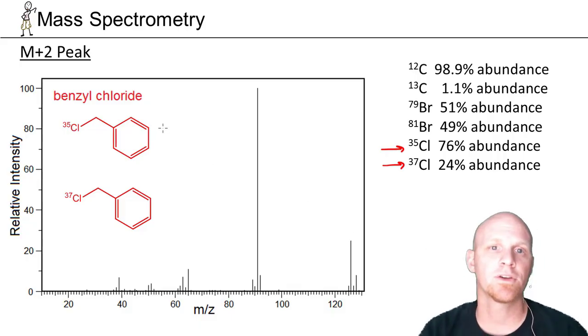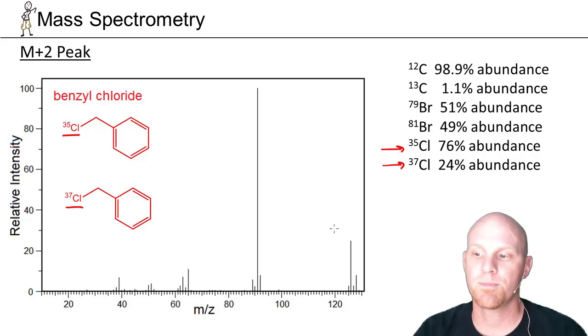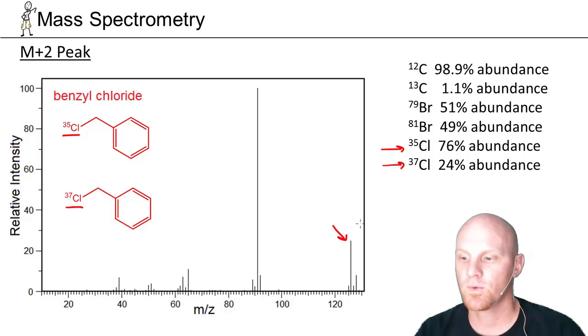When you've got a chlorine in your molecule, you will again have two populations of molecules, those with a chlorine-35 and those with a chlorine-37. The one with chlorine-35, being the higher abundance by a significant amount, will give way to your parent peak. In this case, we're going to see a peak at 126, and that is your molecular ion.